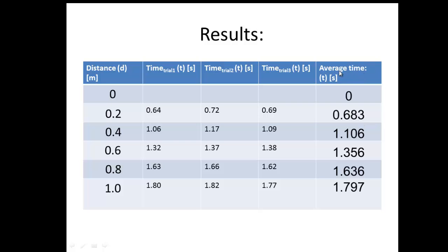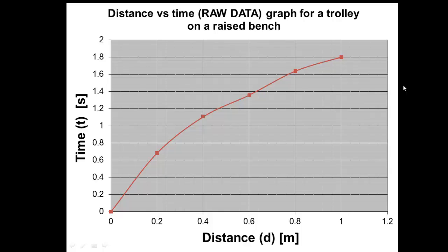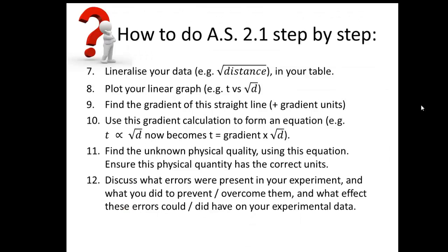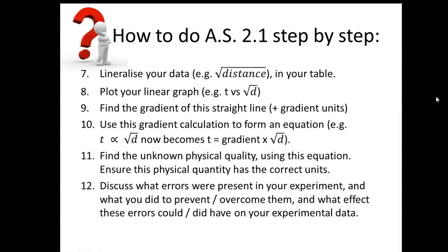We can see the average time - I've done it three times and repeated and averaged. From the data, I'm now going to draw an average time versus distance graph, and I get a curvy graph. Because this is curvy, I now need to be able to linearize it. Step number seven is to linearize your data - you do that in your table first and then you plot a linear graph.